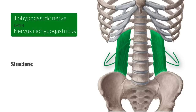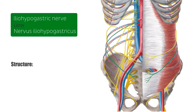Traveling in this direction, the nerve then pierces the transversus abdominis muscle posteriorly, just above the iliac crest, and continues anteriorly between the transversus abdominis and the internal oblique muscles. We can see the transversus abdominis muscle here, with the iliohypogastric nerve making its way across it. The transversus abdominis is the deepest layer of the abdominal muscles, so the internal oblique muscle travels on top of it.